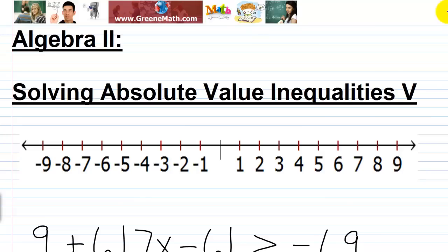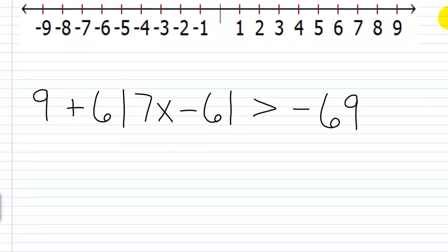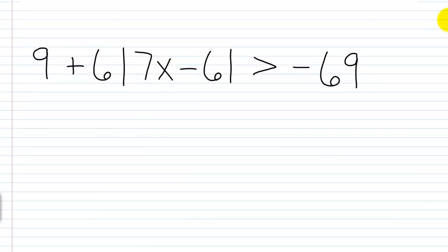In this video, we'll continue practicing solving absolute value inequalities. Let's start with the first one right here. We have 9 plus 6 times the absolute value of 7x minus 6 is greater than negative 69.